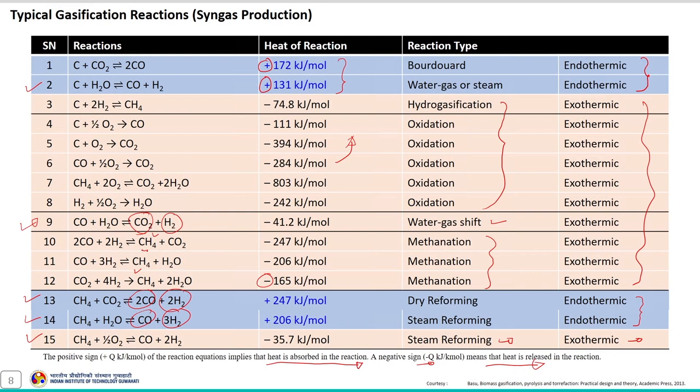That is the reason why some traces of methane can still be observed in the exhaust gas stream of the gasifier, remaining unconverted.